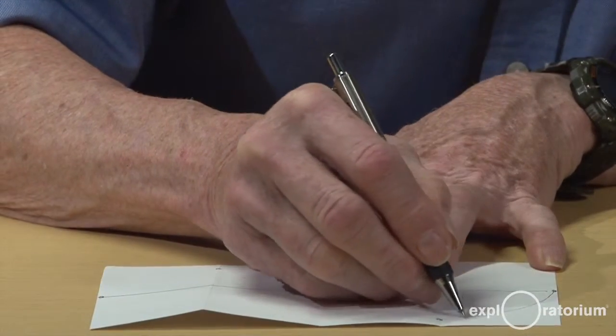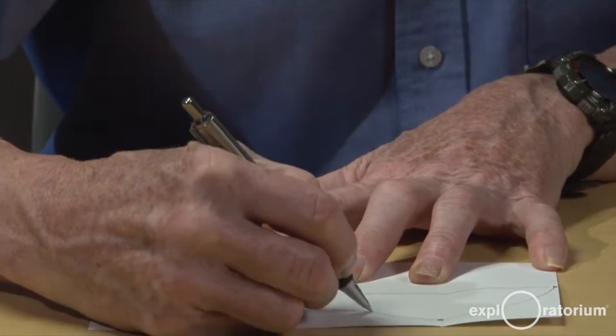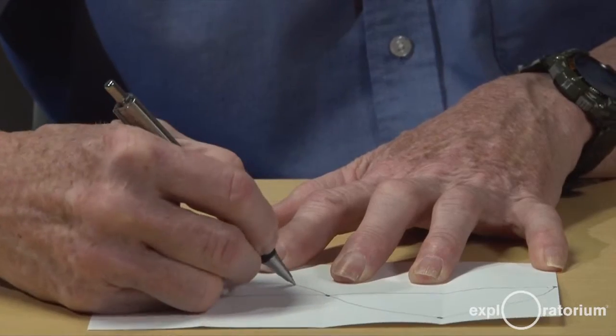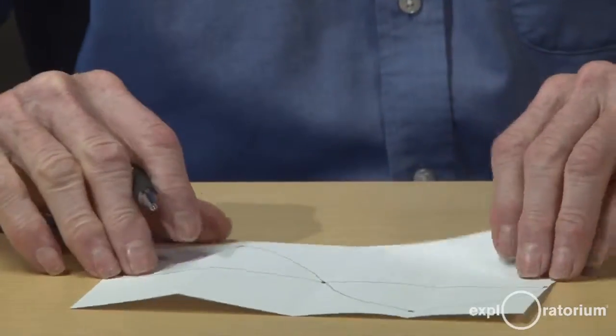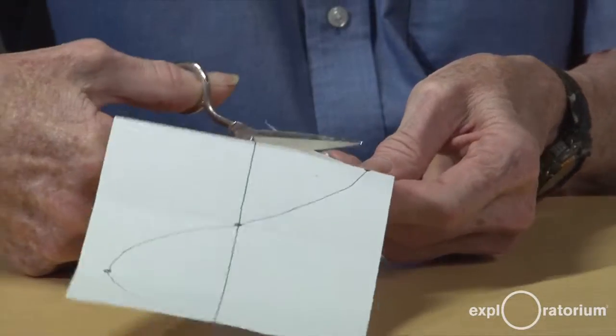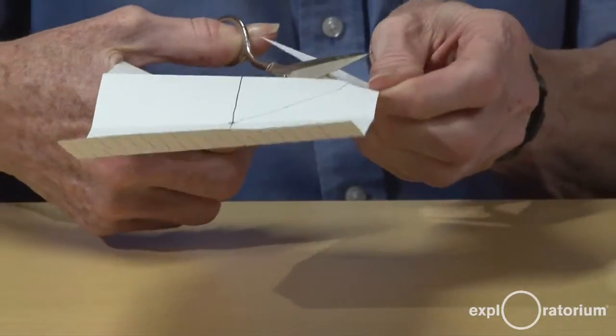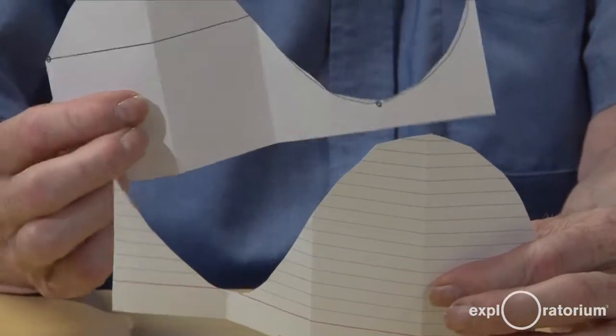And then I draw my best sine wave on this paper, passing through those points. Now I cut it out to make my template and I end up with two for the red wavelength.